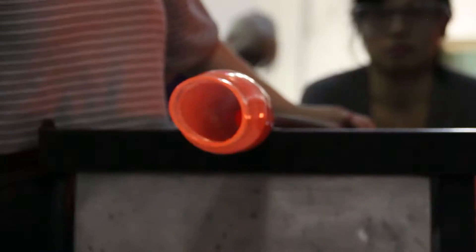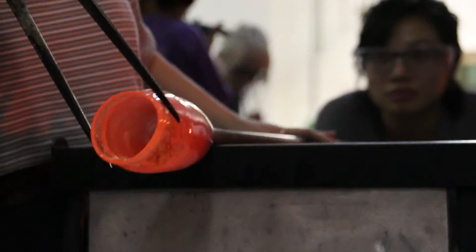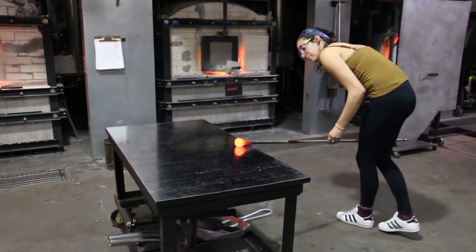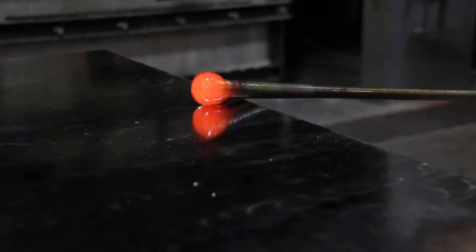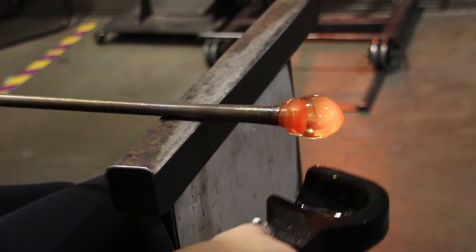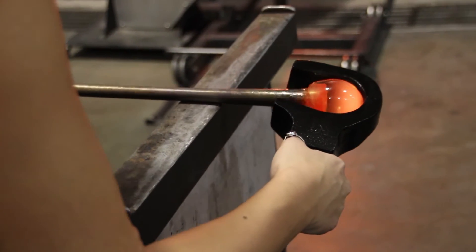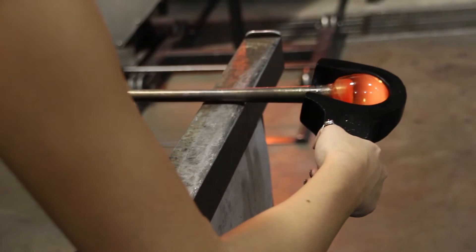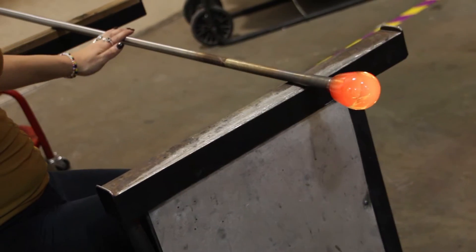After you blow a bubble, you want to draw it out and get the shape of the glass, the shape of the cup. You're constantly turning the glass because gravity is a factor. When it's molten it wants to fall down, and the way you fight that is by keeping it turning. That keeps your shape pretty even. That's honestly one of the most unforgiving parts about glass—keeping it turning even and keeping your shape the way you want it to be.